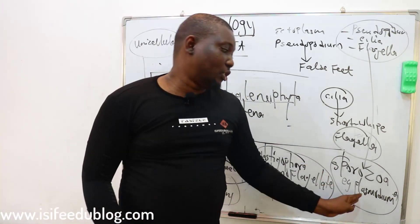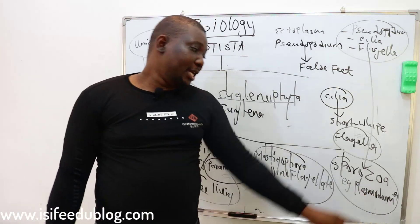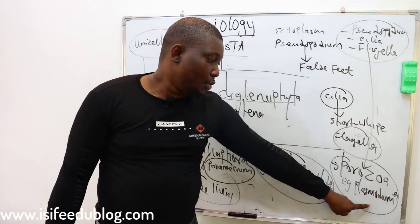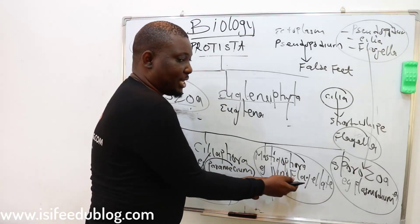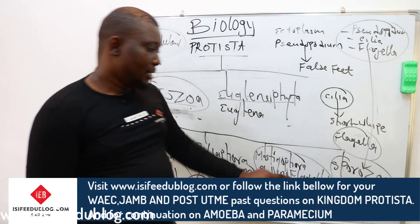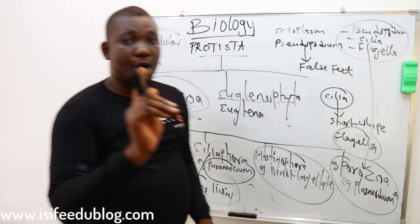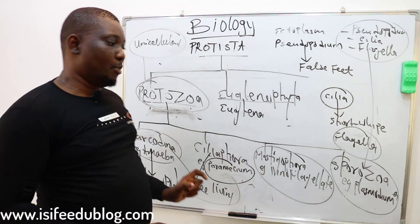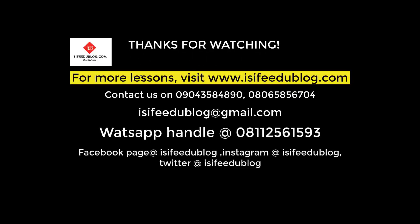All members of Sporozoa are parasites of humans and other animals, while members of Sarcodina, Ciliophora, and Mastigophora are free-living — found mostly in aquatic habitats. Plasmodium is the major cause of malaria, parasitic to birds and man, and is transmitted by the female Anopheles mosquito. Mastigophora can also be parasitic — Trypanosoma, the major cause of trypanosomiasis, is transmitted by the tsetse fly. The two basic parasitic protozoa are Mastigophora and Sporozoa. Mastigophora possesses flagella for locomotion, while Sporozoa possess neither pseudopodia, cilia, nor flagella.